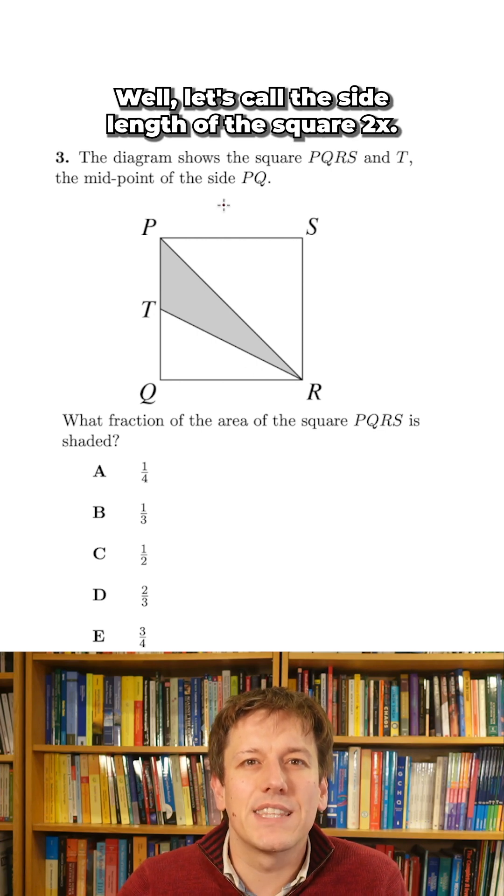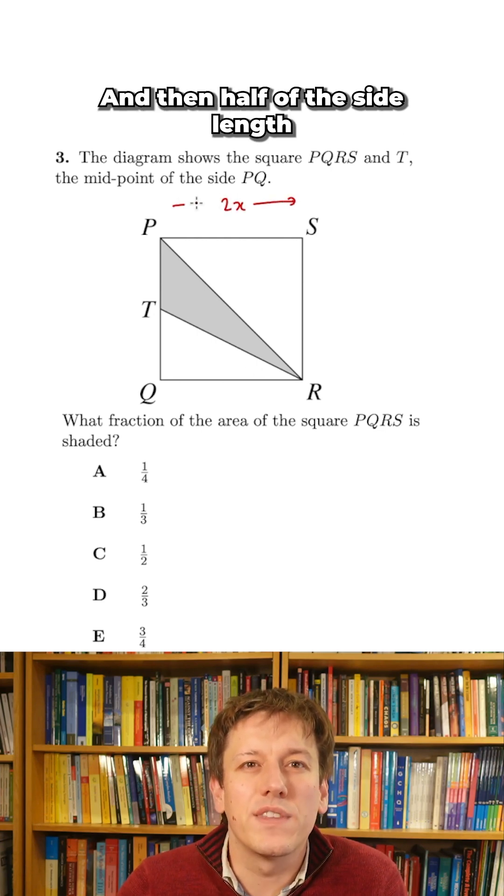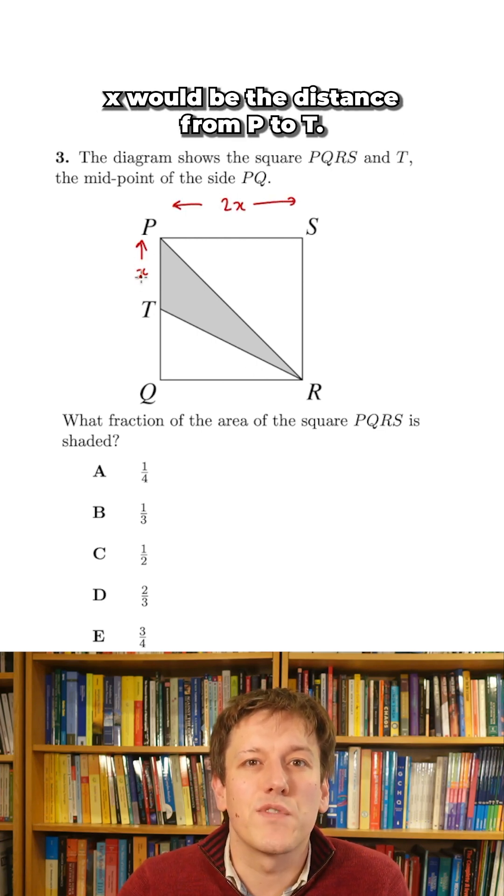Well, let's call the side length of the square 2x, and then half of the side length, x, would be the distance from P to T.